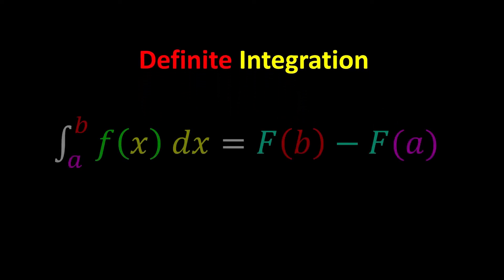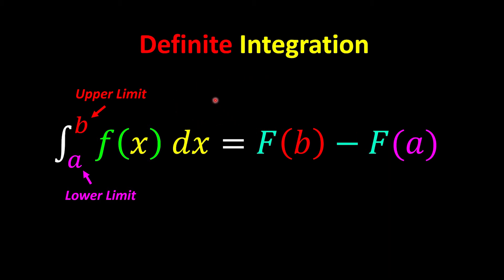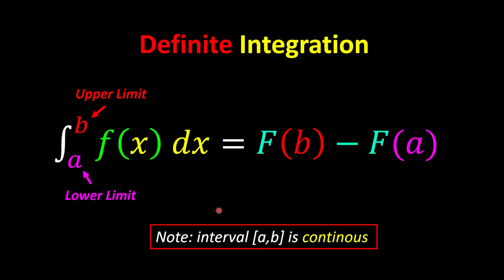Definite integration is basically the same as indefinite integration, but now we have a lower limit and upper limit. To find the answer for definite integrations, we find the indefinite integration first, then substitute the upper limit minus the lower limit. Just remember that the upper limit doesn't necessarily have a higher value, but we must ensure that for the interval from A to B, the function must be defined and continuous.